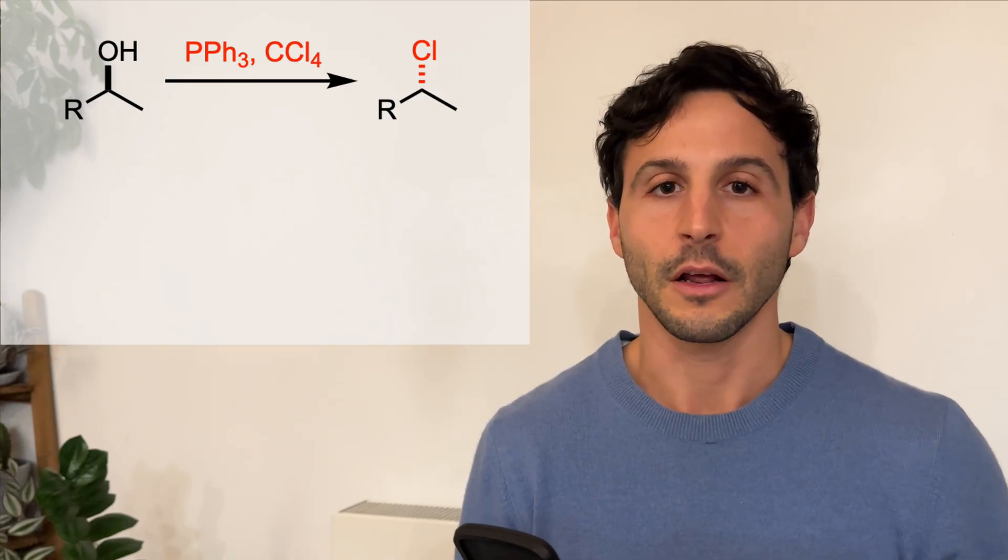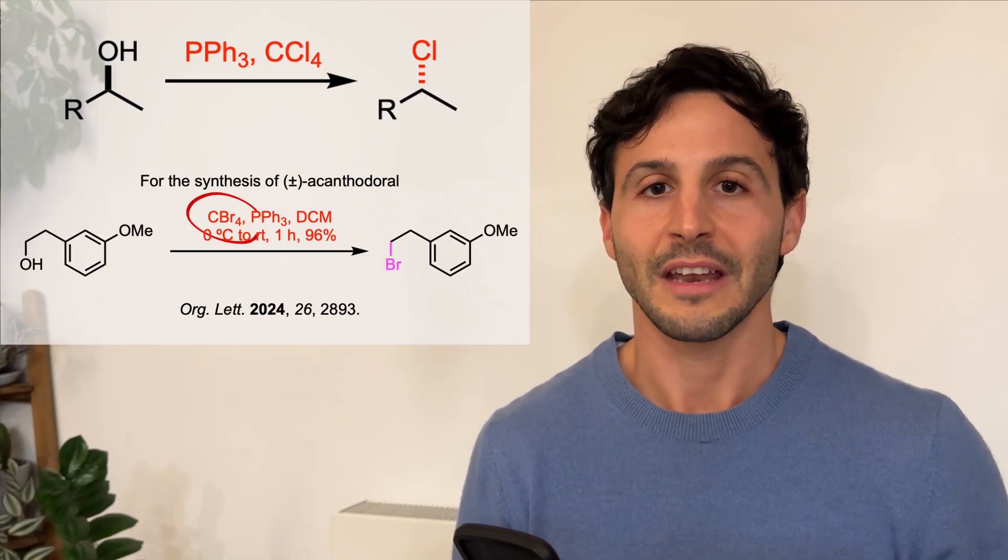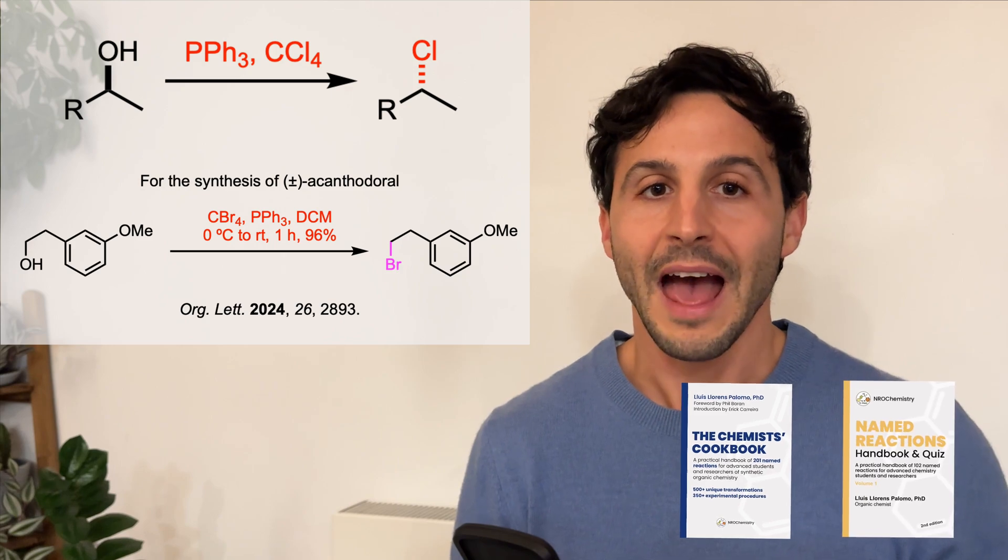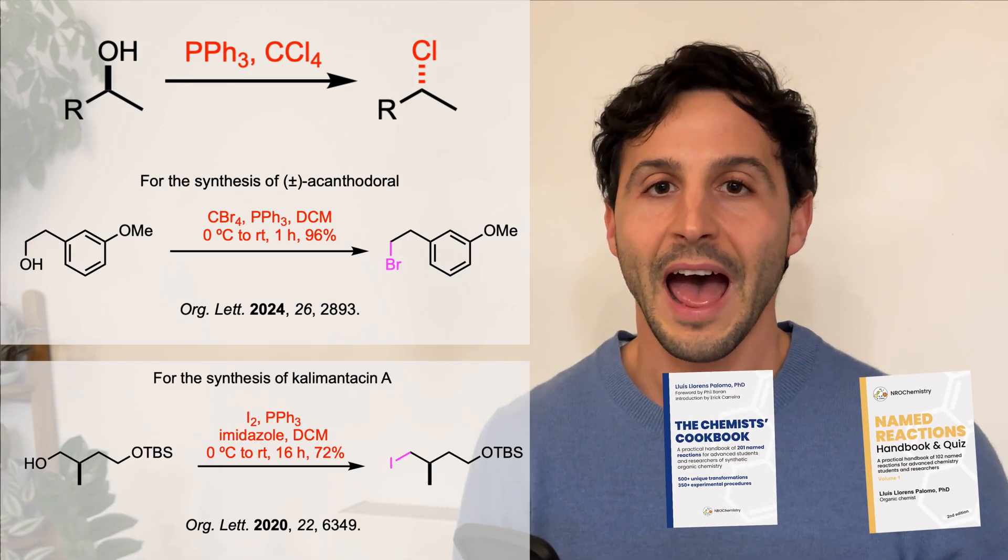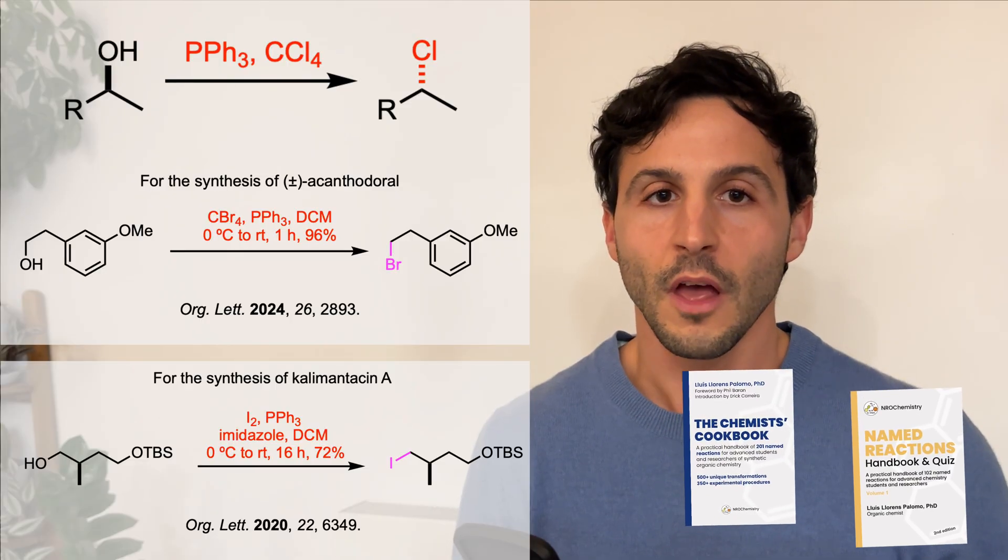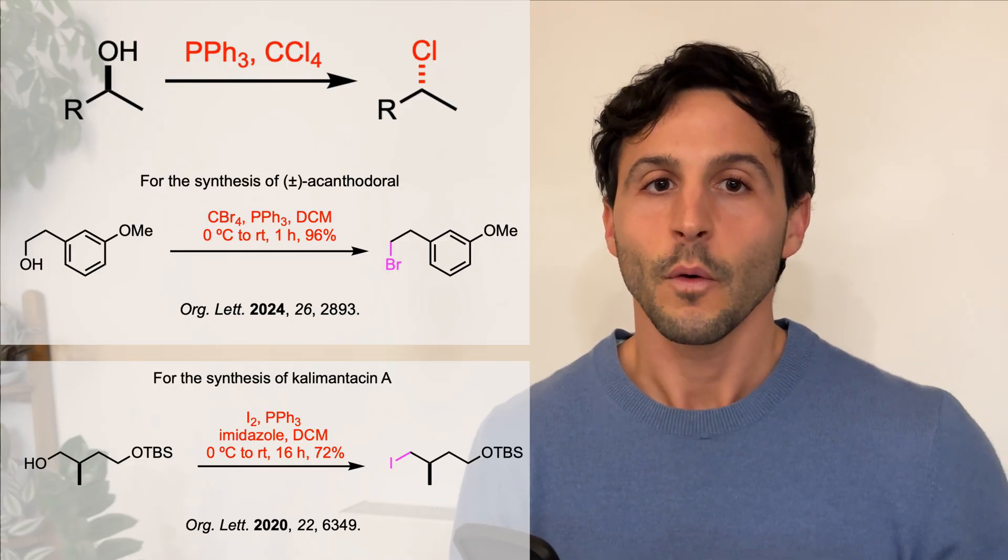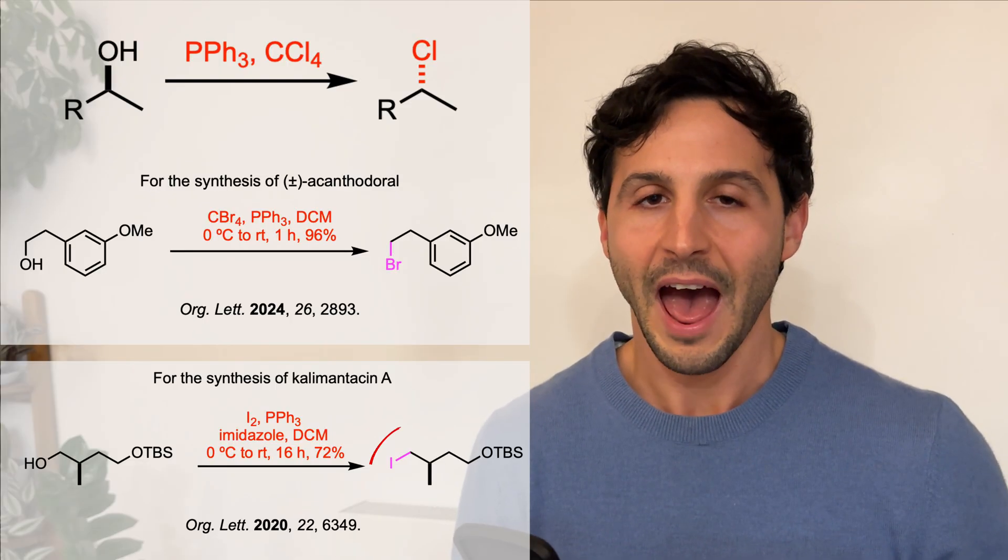In addition to forming alkyl chlorides, using carbon tetrabromide or bromine as the halide source will yield alkyl bromides. Using carbon tetraiodide or another source of iodide ions will instead give alkyl iodides.